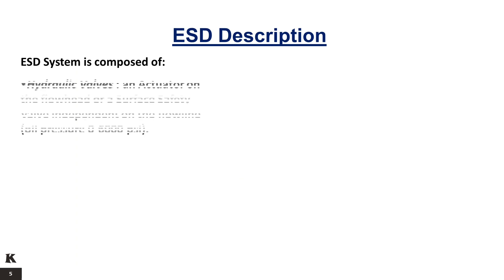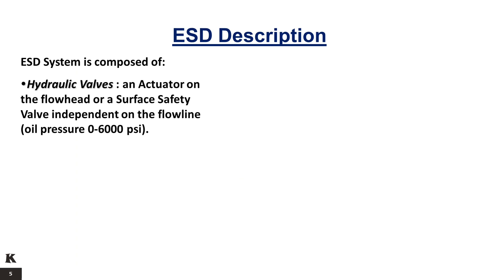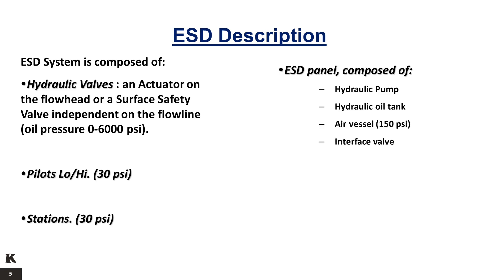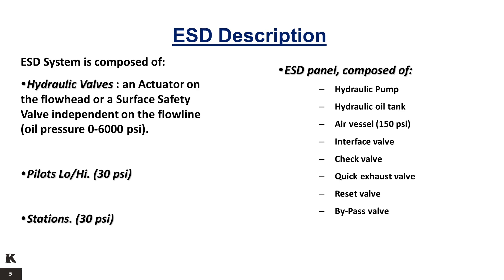The ESD system is composed of hydraulic valves; an actuator on the flow head or a surface safety valve independent on the flowline, oil pressure 0 to 6,000 PSI; high-low pilots at 30 PSI; stations at 30 PSI; and an ESD panel composed of a hydraulic pump, hydraulic oil tank, and air vessel at 150 PSI. The panel also includes an interface valve, check valve, quick exhaust valve, reset valve, and bypass valve.